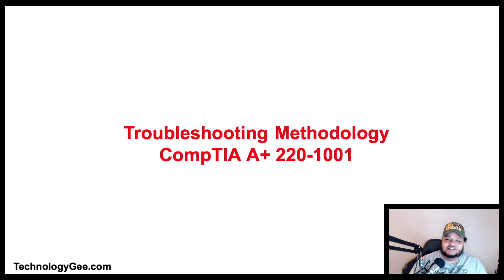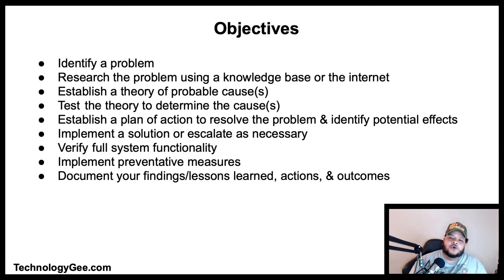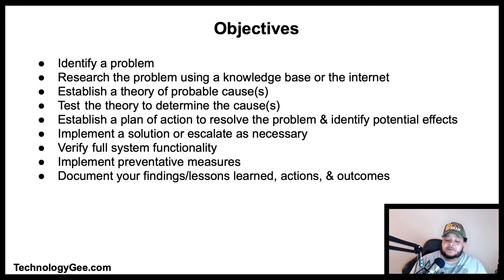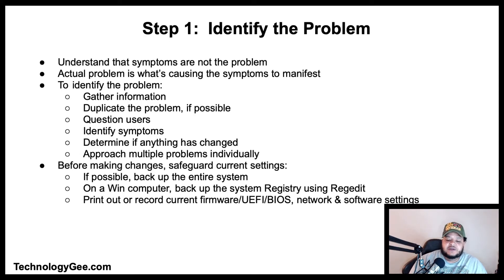What's up everybody, this is your boy Tech G back with another video to help you successfully pass the CompTIA 220-1001 examination. In this video we are going to be talking about the troubleshooting methodology. You're going to learn how to identify a problem, research the problem using a knowledge base or the internet, establish a theory of probable cause, test the theory, establish a plan of action, implement the solution or escalate, verify full system functionality, implement preventative measures, and document your findings.